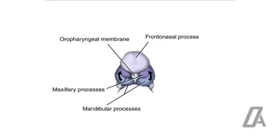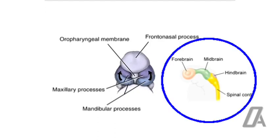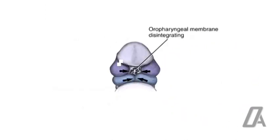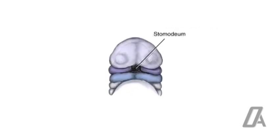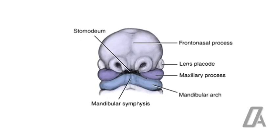The mandible starts its development as a swelling that grows ventromedially to approach the fellow of the opposite side. In the meantime, it gives off a bud for the maxillary arch. By the time the mandibular swelling is developing, the downward growth of the forebrain can be visualized as the frontonasal process, which overhangs the stomodeum, or primitive oral cavity. The floor of the stomodeum is covered by the buccopharyngeal membrane. By the fifth week of intrauterine life, the mandibular processes of both sides approach each other and are fused. Meckel's cartilage extends from the area of the future ear to the midline of the fused mandibular processes.